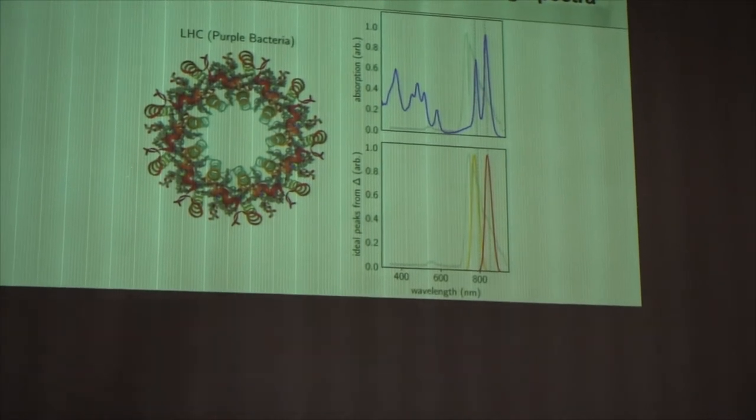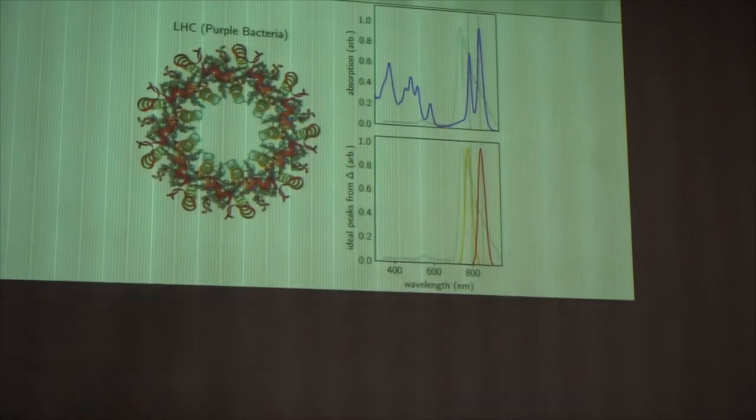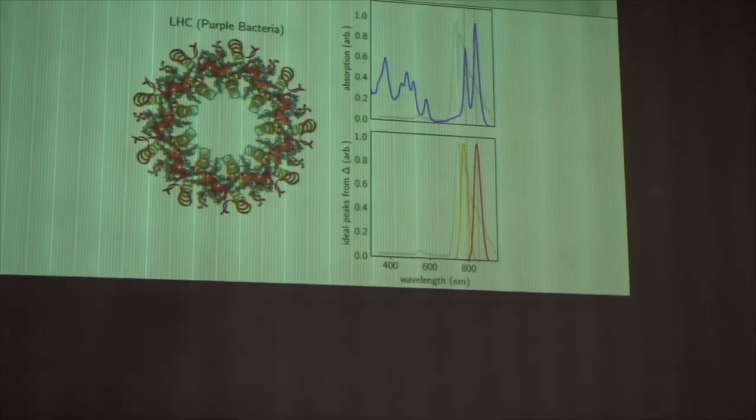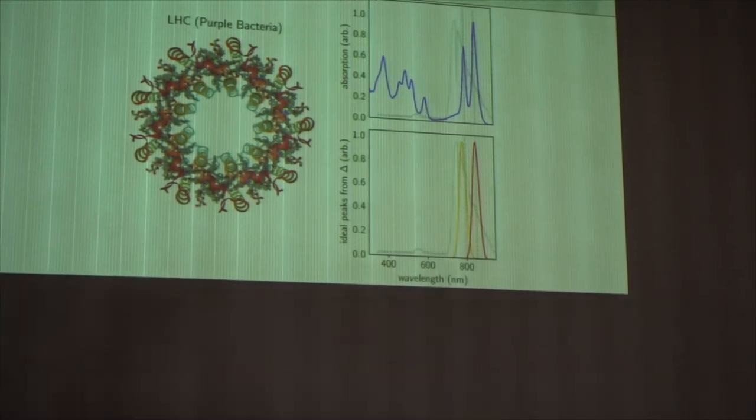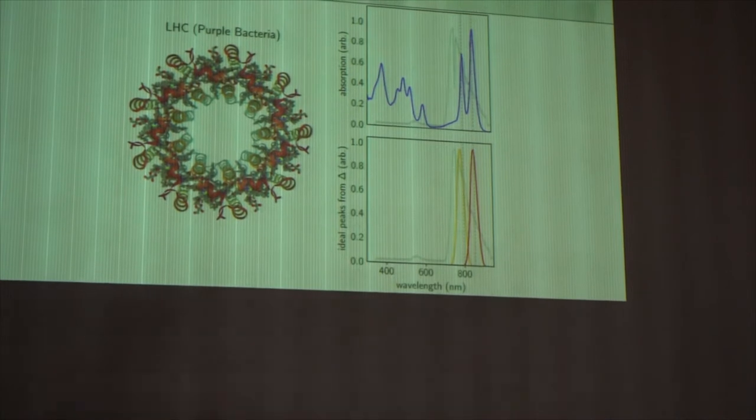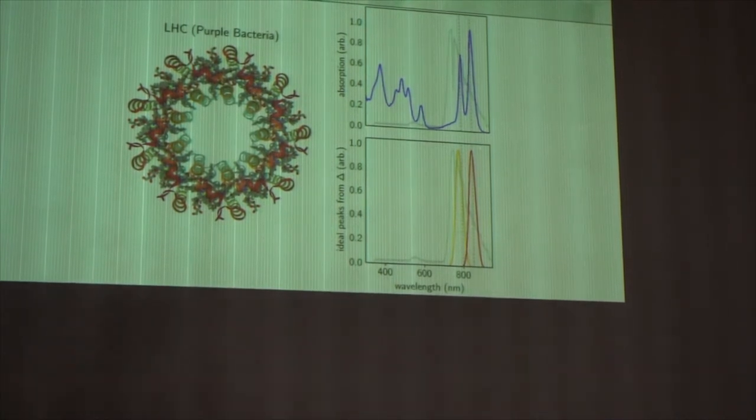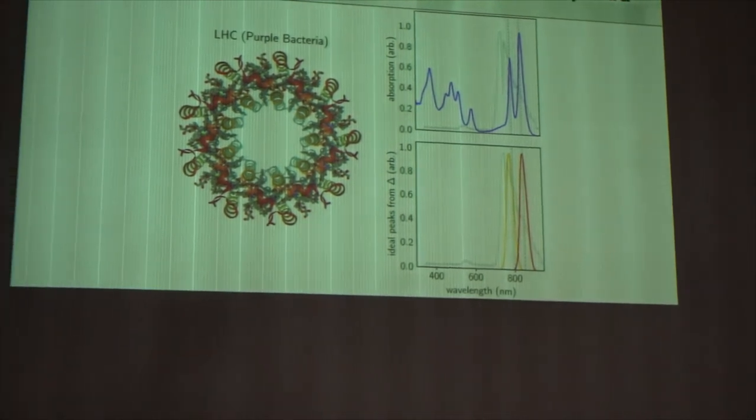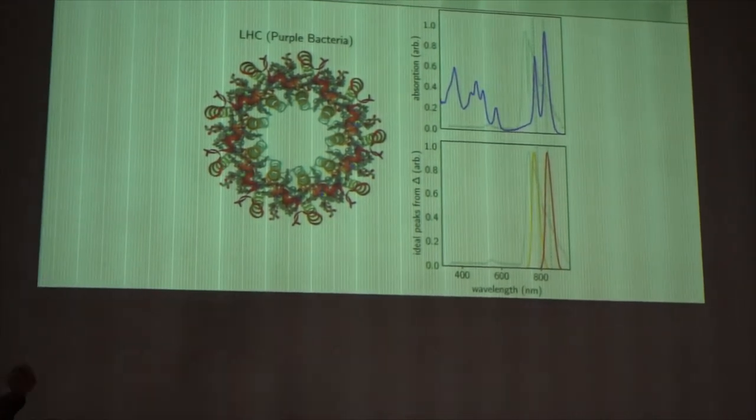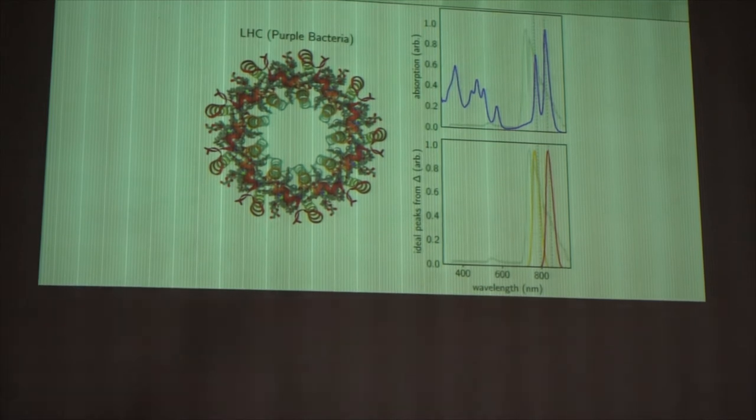He basically told me about these bacteria. These are basically purple bacteria. Their spectrum is shifted to the red because they live under the canopy, so that they see a different solar spectrum. And we were able to reproduce again their absorption spectrum with the same premise, that what nature is doing is essentially regulating by reducing the noise in the system.